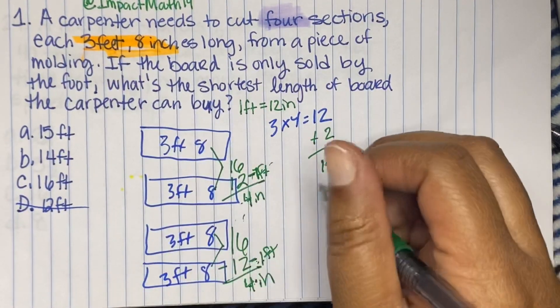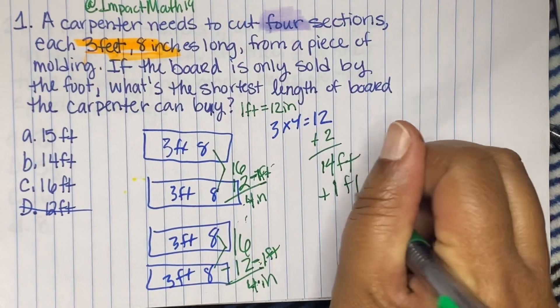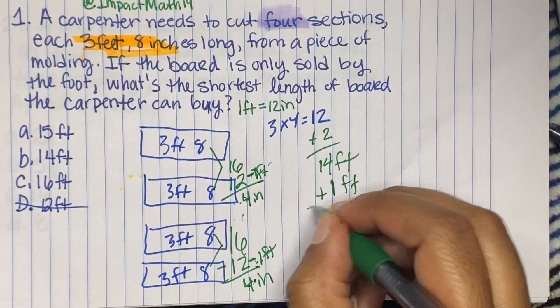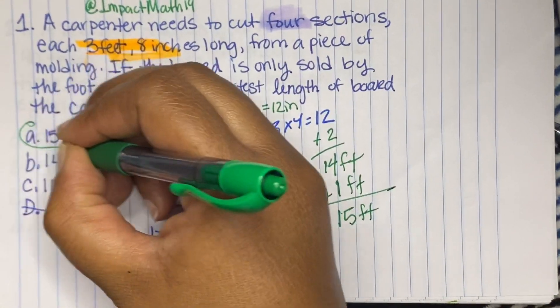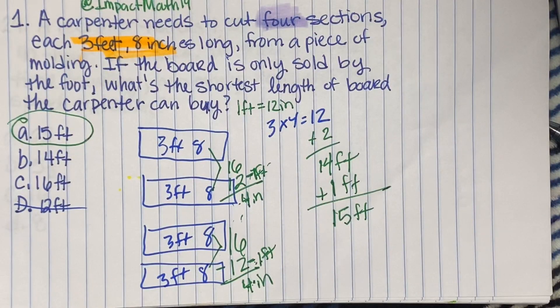So even though this is eight inches, remember, it's only sold by the foot. So we would need one more foot to cover this extra eight inches that we would need. So our answer will be 15 feet. And A would be our answer.